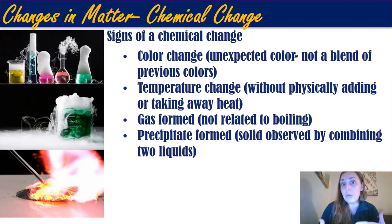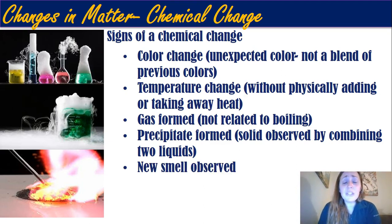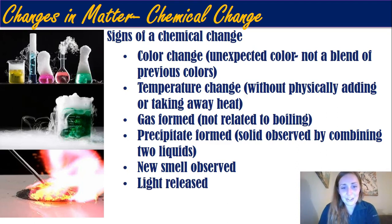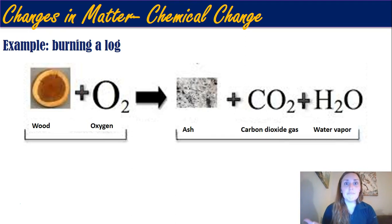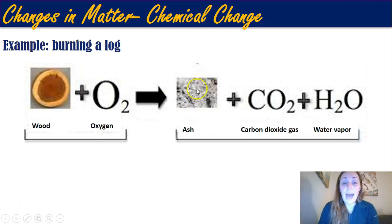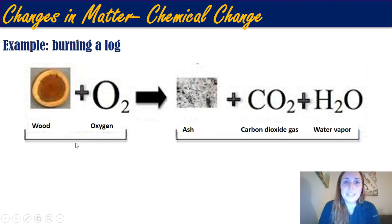If gas is made — not because you boiled something or added heat, but something just starts bubbling unexpectedly — that's a chemical change. If a precipitate forms — meaning a solid appears when you mix two liquids together and suddenly there's a solid inside — that's a chemical change; one of your products is a new solid substance. A new smell being released that wasn't there before is also a sign of a chemical change, as is light being released. Burning a log is a good example: once you burn it, it's no longer a piece of wood. You're left with ash, carbon dioxide from carbon bonding with oxygen, and water vapor from water inside the wood.